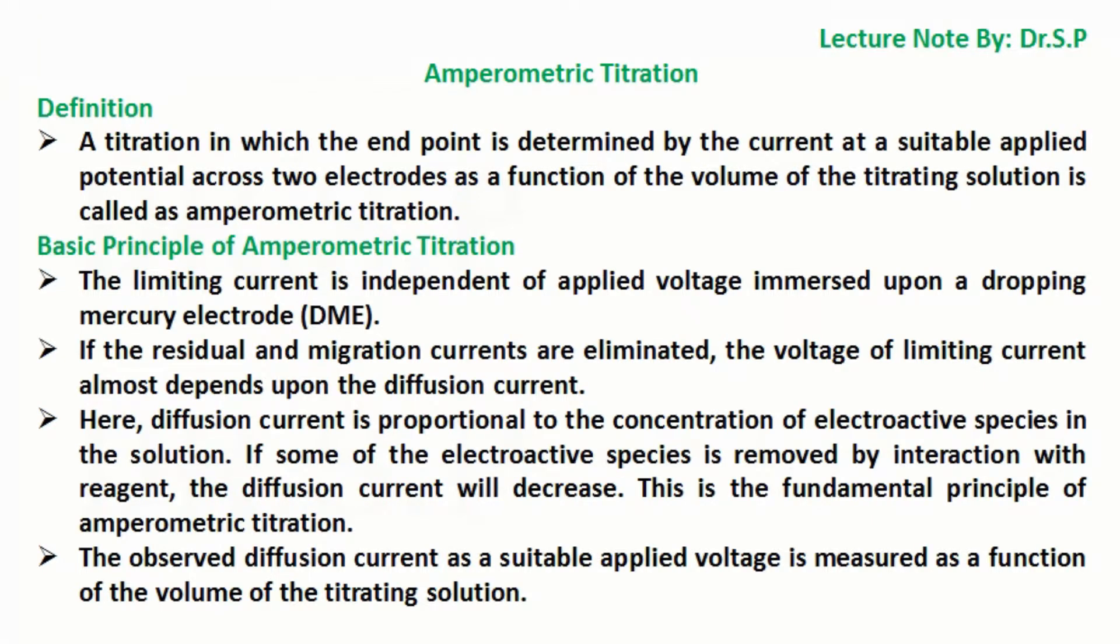In this tutorial we will discuss amperometric titration. Let's start with the definition. A titration in which the end point is determined by the current at a suitable applied potential across two electrodes as a function of the volume of the titrating solution is called amperometric titration.